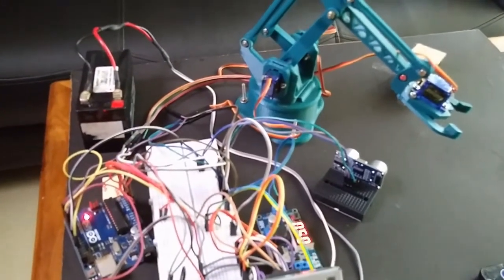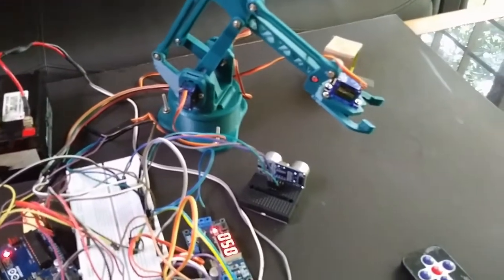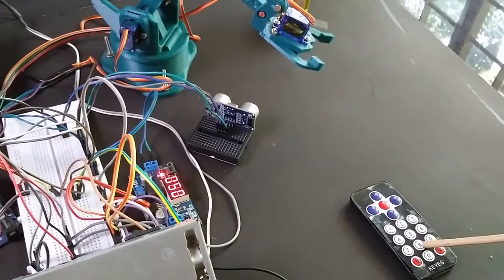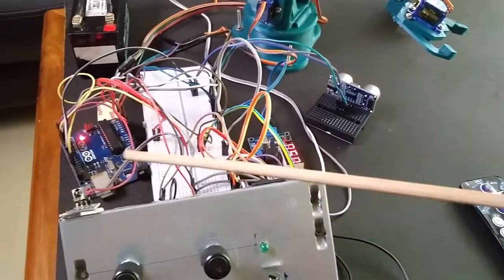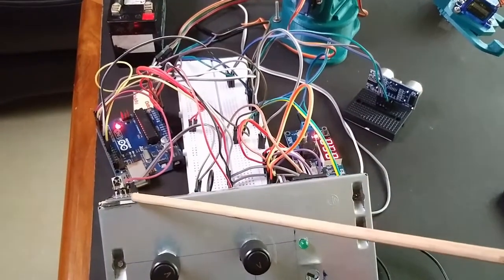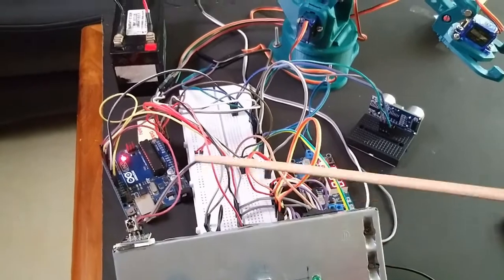After each movement I can save the movement using the IR remote. Signals sent by the remote are received by the IR sensor over here. All these are connected to the Arduino.